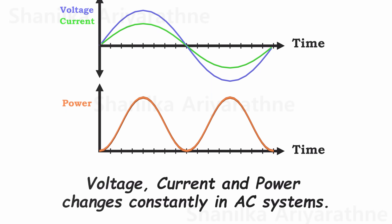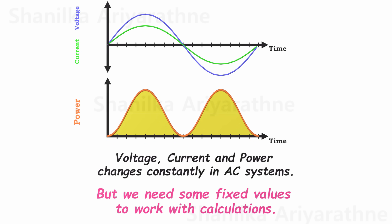Examine these graphs. Voltage, current, and power all undergo continuous changes in AC systems. However, for calculations, we require some fixed values. How do we achieve that? Here's a simple trick.